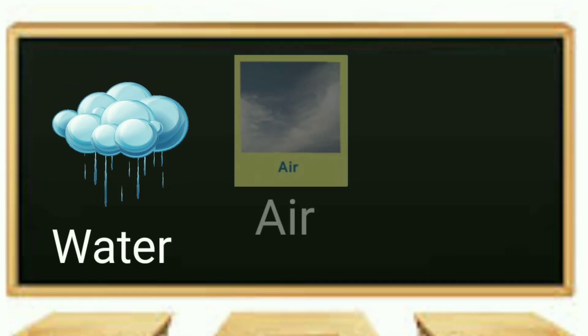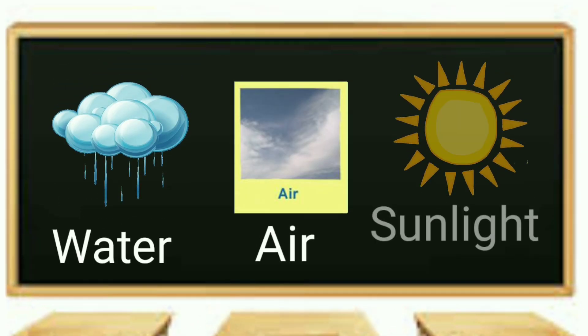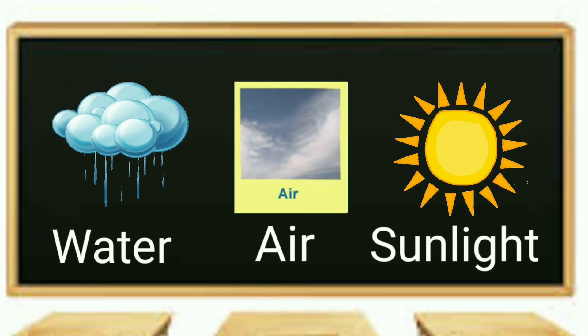Plants need water, air, and sunlight to grow. Plants can make their own food with help of sunlight.